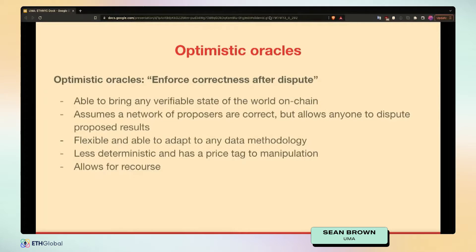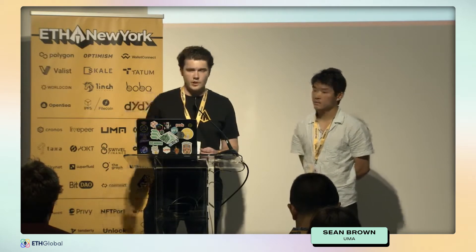Optimistic oracles are a different take on the oracle problem. Optimistic oracles enforce correctness after a dispute. They're good for bringing any type of data that is generally verifiable on-chain, so you can ask a much broader set of questions. Rather than only getting crypto prices, you can ask very general questions — like who won the Lakers game last night, who won a political election, or what happened on another blockchain network. Those are all things optimistic oracles can serve very easily.